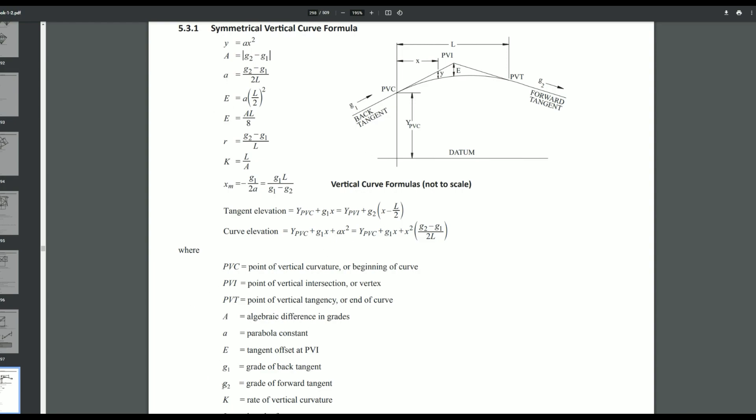G1 is basically the first slope that you see. In other words, G1 is down here. It says G1 is the grade of the back tangent. So it's basically just the first slope that you see.